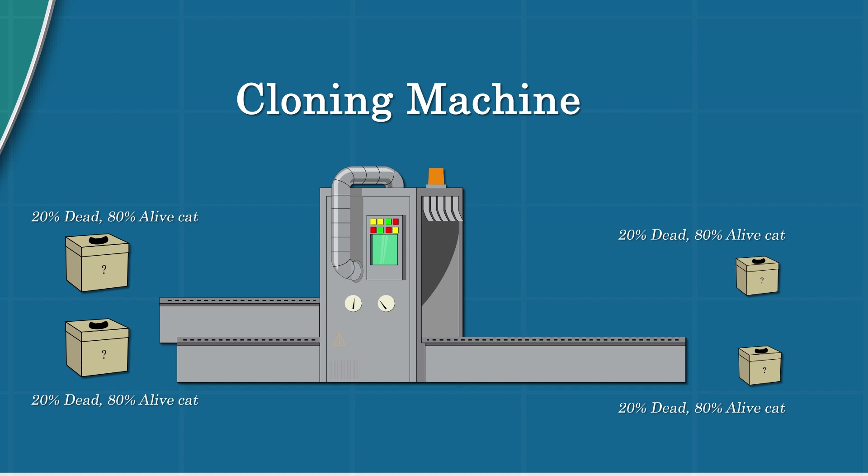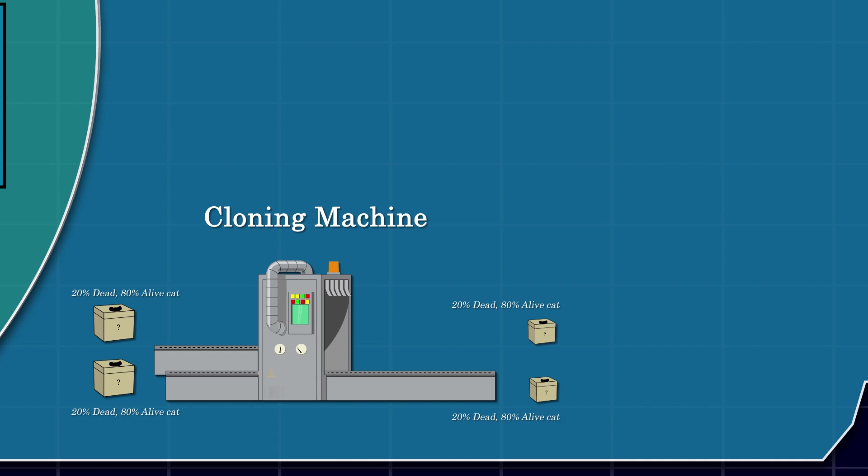It turns out that's an impossible task. And of course, we can't peek inside the box before putting it in the machine. Otherwise, it will collapse the state of the zombie cat into a dead or alive state.